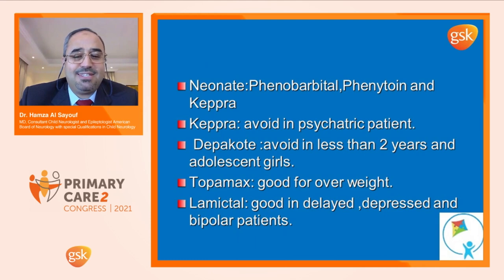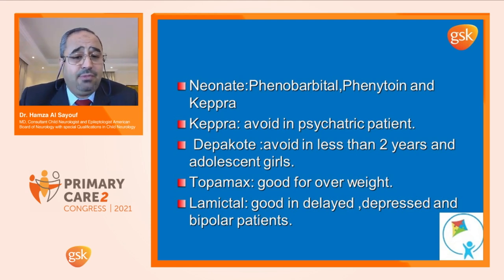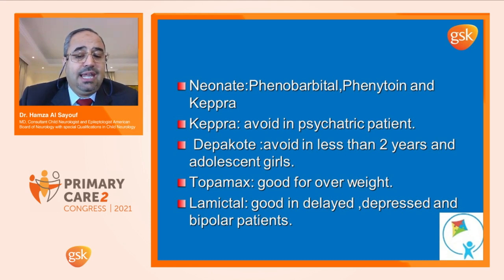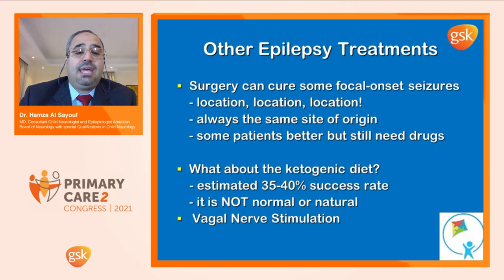A few pieces of practical information: in neonates, I can use phenobarbital, phenytoin, and Keppra. I try to avoid Keppra in psychiatric patients. Depakine — I try to avoid it as much as possible, but sometimes I have to use it. I always tell families: if you have a 1990 Mercedes Benz and a 2022 Mercedes Benz, which do you want to drive from Dubai to Abu Dhabi? Both can work, both can get you there — but with the 2022 you are a lot more assured and will have a much smoother trip. Topiramax is good for overweight patients. Lamictal is good in depressed and bipolar patients, but don't forget the rash risk.